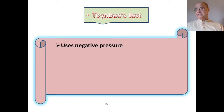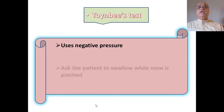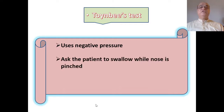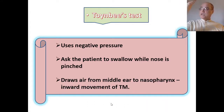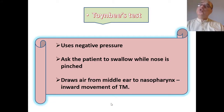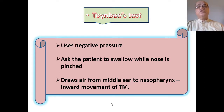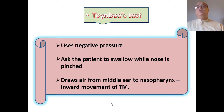There is also Toynbee's test, which is the reverse of Valsalva. In Valsalva we generate positive pressure in the nasopharynx, while in Toynbee's test we use negative pressure. To create negative pressure, simply ask the patient to swallow while the nose is pinched. This creates negative pressure in the nasopharynx, which draws air from the middle ear, resulting in negative pressure in the middle ear and inward movement of the tympanic membrane on otoscopy.